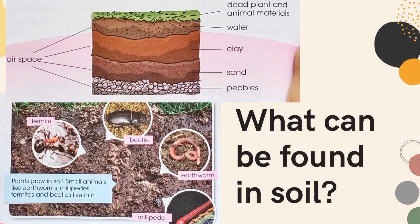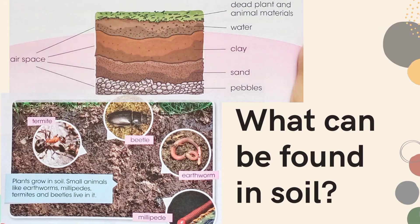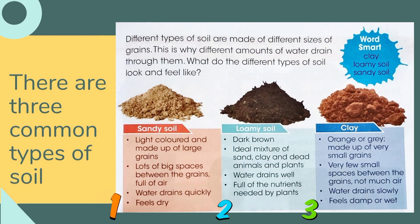What can be found in soil? We can find dead plant or animal materials, water, clay, sand, pebbles, and also small animals like earthworms, termites, and beetles. Plants and animals turn into humus after a long time. Humus contains plant food called nutrients.